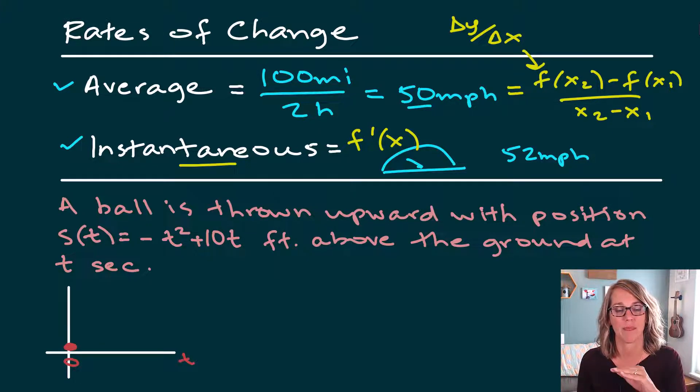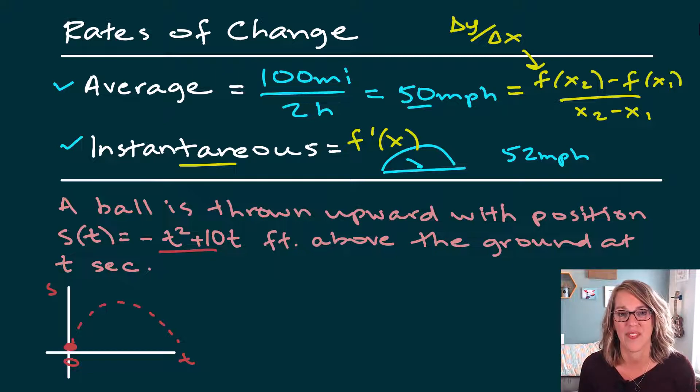So I've got time across my horizontal axis. The height from the ground is my position, and that's going to be on my vertical axis. So if we follow the path of this ball over time, even though it's going straight up and straight down, I can track it in this parabola given by that function.